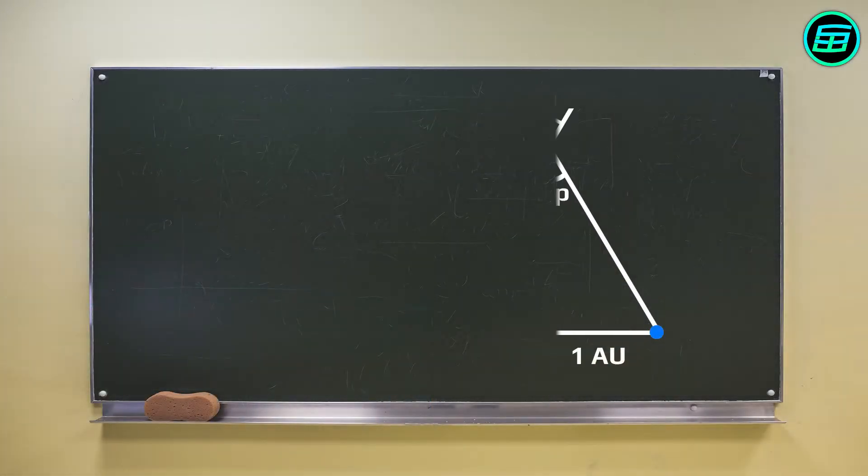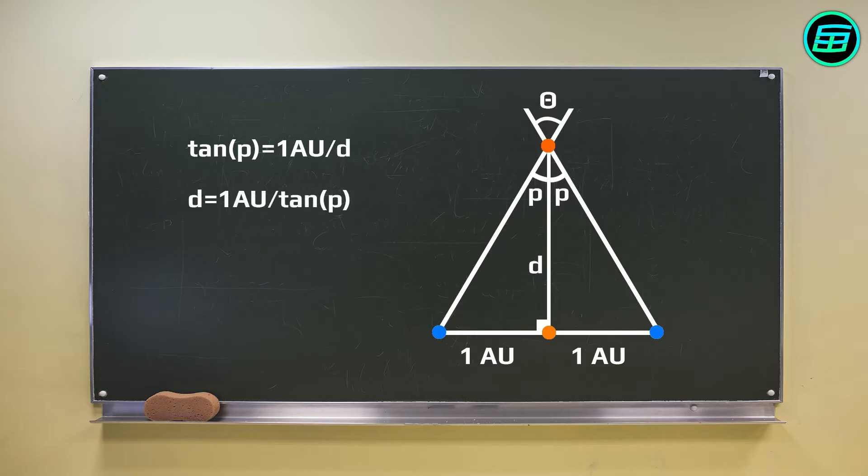After finding the parallax angle, we just need to write down the tangent formula for this angle. So the distance of a nearby star can be found using the formula d equals one astronomical unit over the tangent of the parallax angle.